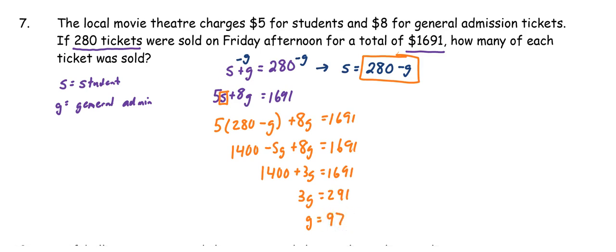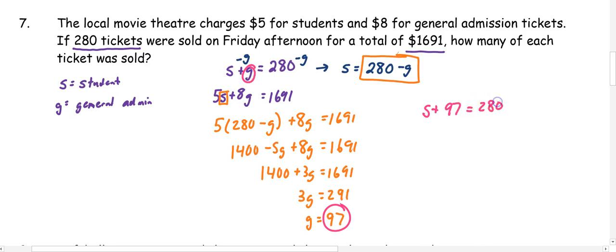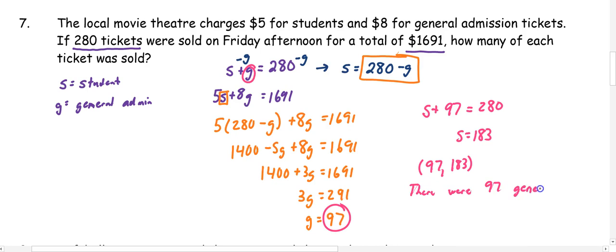Now that I know G is 97, I substitute back. I'll use the first equation because there's less work: S plus 97 equals 280. Subtracting 97 from both sides gives S equals 183. Remember with ordered pairs, go in alphabetical order if they're not x and y, so we have 97, 183. Since it's a word problem, we also write a sentence: there were 97 general admission tickets and 183 student tickets sold.